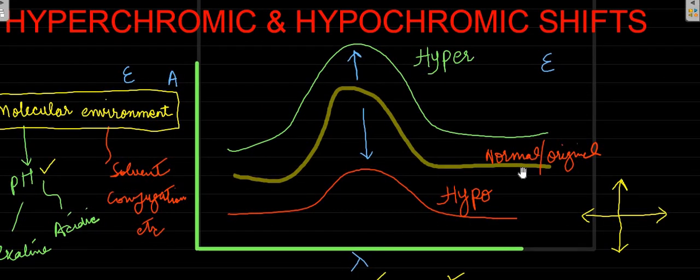We can say there are four possible shifts in UV spectrum. Two we have discussed here—the hyperchromic shift and the hypochromic shift. Similarly, if the wavelength shifts towards shorter wavelength, it is referred to as blue shift or hypochromic shift, and if the wavelength shifts towards longer wavelength,